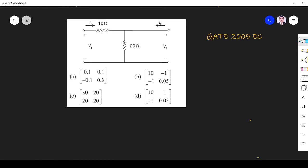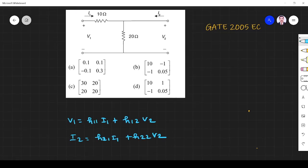The h-parameter equations we know are: v1 equals h11 i1 plus h12 v2, and i2 equals h21 i1 plus h22 v2.